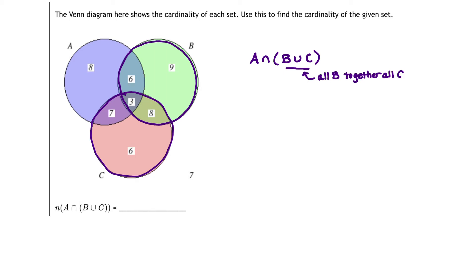But now what are we supposed to do with that? Well, we're supposed to take that set and intersect it with the set A. Intersecting with A means we want to find the overlap. Specifically, we're looking for the overlap of A or where A meets B union C.